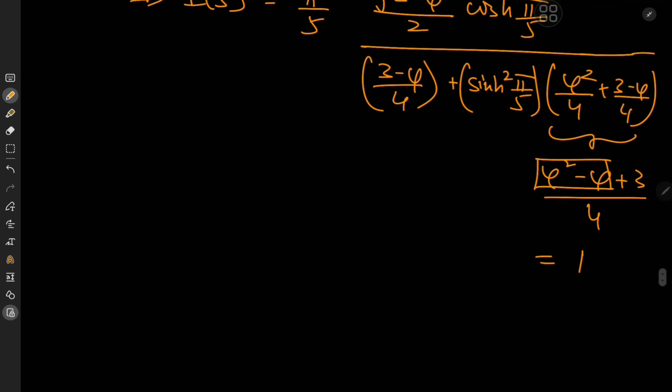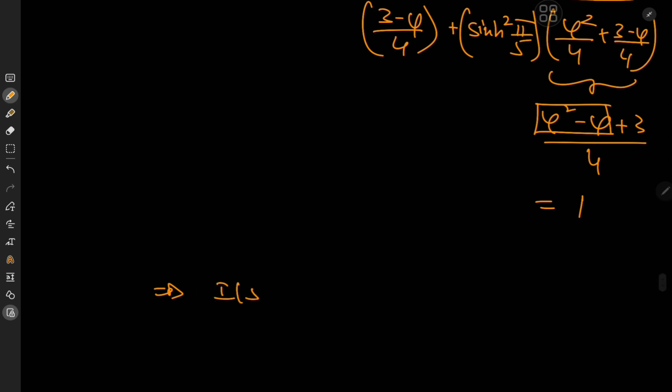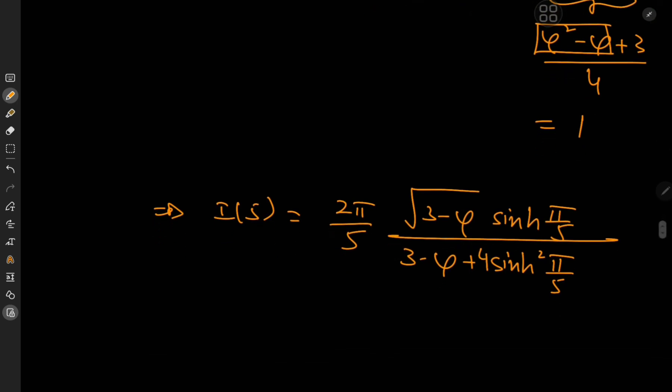So that means we have i of 5 equal to 2 pi by 5 times root 3 minus phi times the sinh of pi by 5 divided by 3 minus phi plus sinh square pi by 5 times 4, which is quite an interesting result involving hyperbolic trig functions.